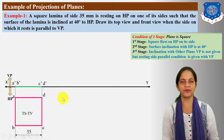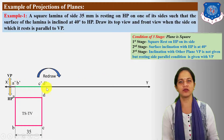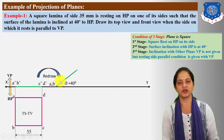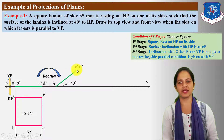Next, draw the second stage front view and top view. In the second stage, the angle condition with HP is given as 40 degrees. Redraw the first stage front view straight line. Keep the left side A'B' on the XY line and from A'B' draw a 40-degree angle line. Take the length of this line equal to the first stage front view straight line length and mark C' and D' points.